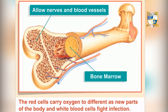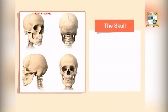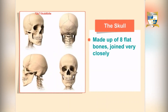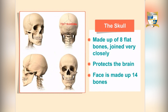The skull is made up of eight flat bones joined together very closely. The skull protects the brain. The part of the skeleton under the face is made up of 14 bones.